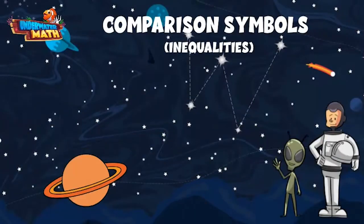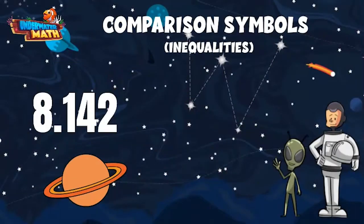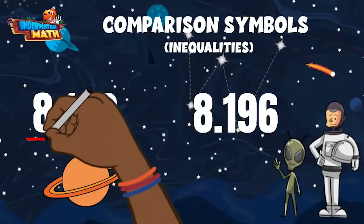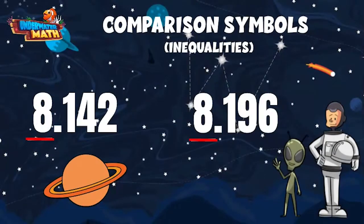Lenny told me his home is 8.142 light years away from here, and his best friend lives 8.196 light years away. Which distance is greater? Remember, when comparing numbers, we start at the furthest place value to the left. On these two numbers, that is the one's place. Both of these numbers have an 8 in the one's place, and we are not able to compare them yet.